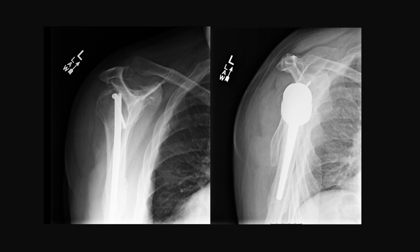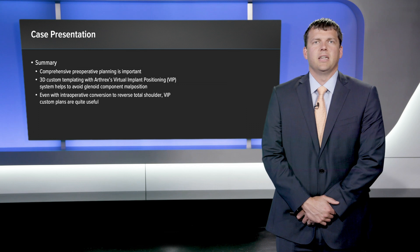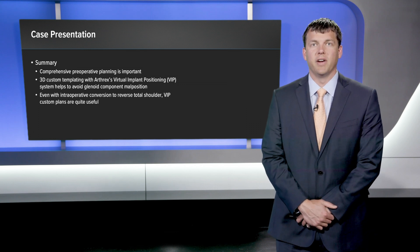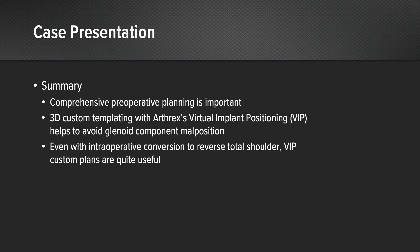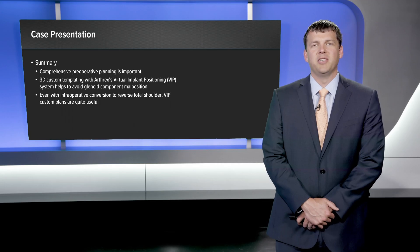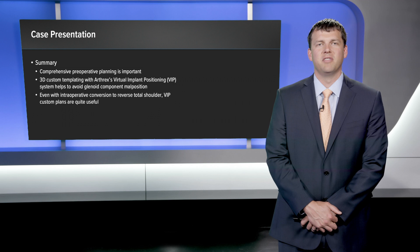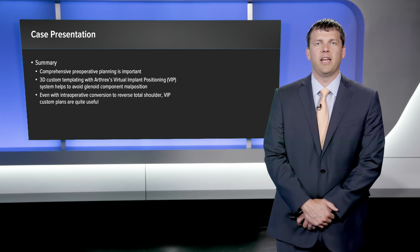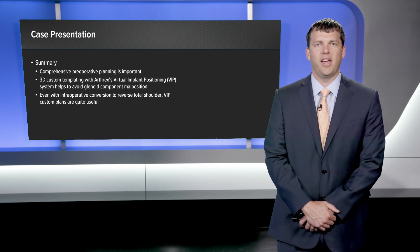I always enjoy looking at the scapular Y views on these posteriorly subluxated Walch B1 and B2 glenoids because you can see significant correction in the plane of the scapula. In summary, comprehensive preoperative planning is very important in total shoulder arthroplasty. 3D custom templating with the Arthrex VIP system helps avoid glenoid component malposition even if there's hardware in the proximal humerus causing scatter on the CT scan. Even with intraoperative conversion to a reverse total shoulder, the VIP custom plan was quite useful in correction of our retroversion and inclination.